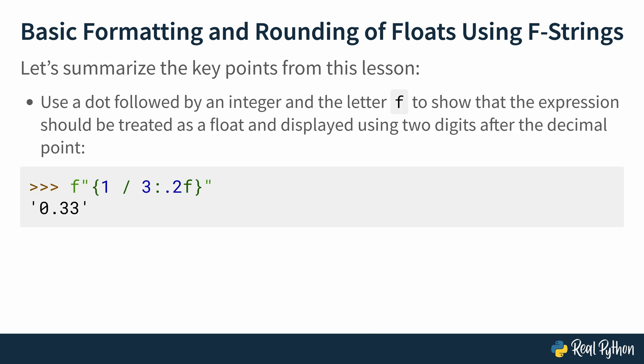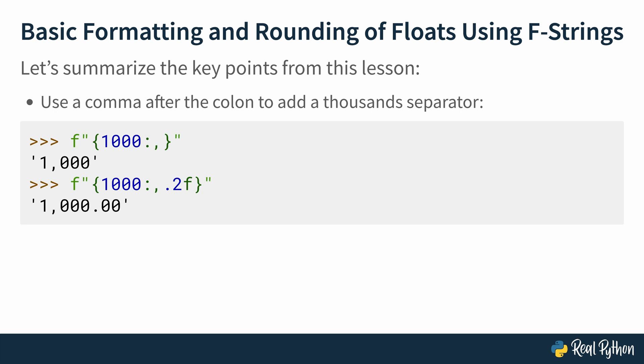In this lesson we've looked at a couple of format specifiers. You can use a dot followed by an integer and the letter f — this shows that the expression should be treated as a float and displayed using that many digits after a decimal point. For example, with the expression one divided by three, a colon followed by .2f will display the number with two digits after the decimal point. You can also use a comma after the colon to add the thousand separator for numbers that need it. For instance, the number 1000 with comma dot 2f after the colon will show 1,000.00.